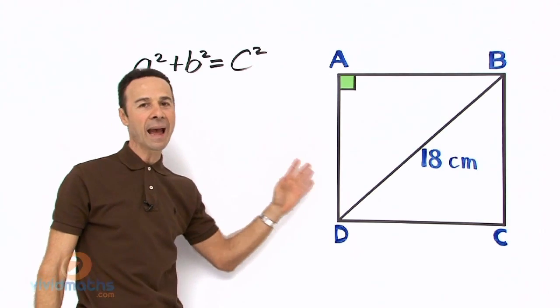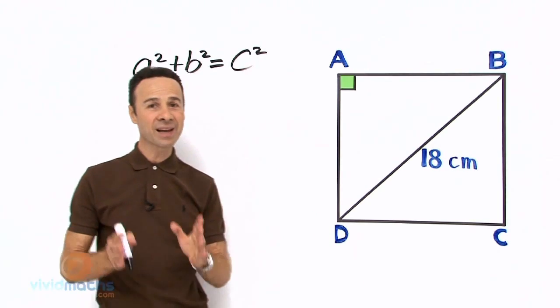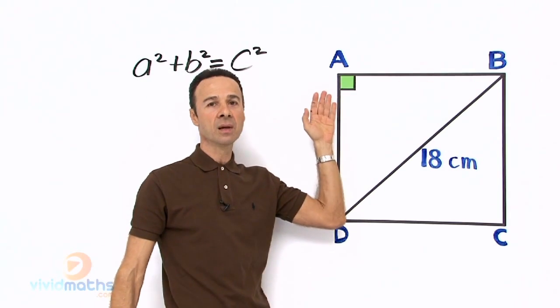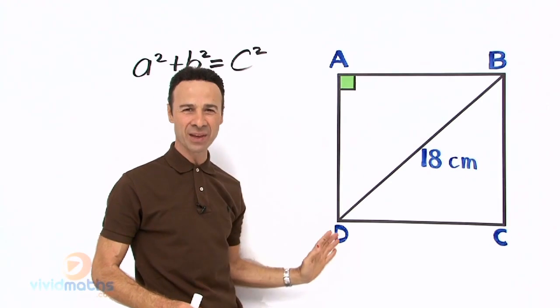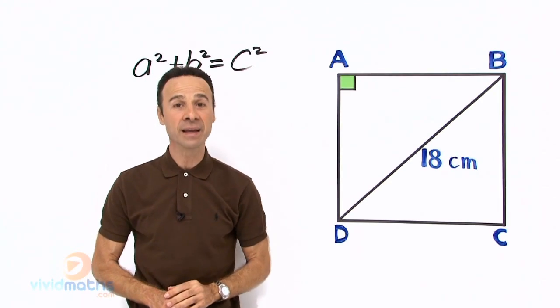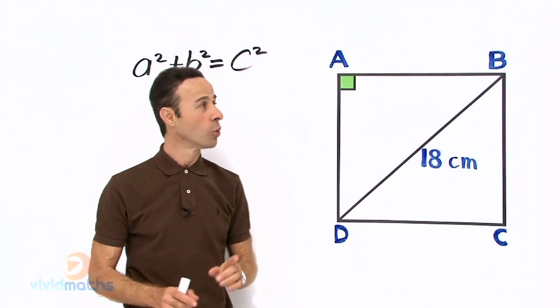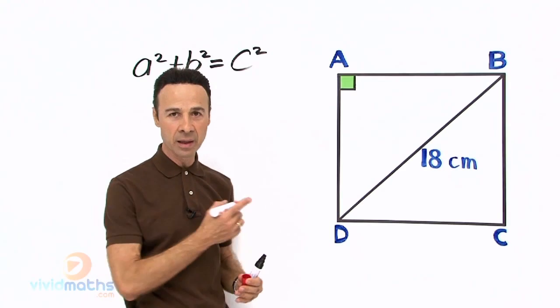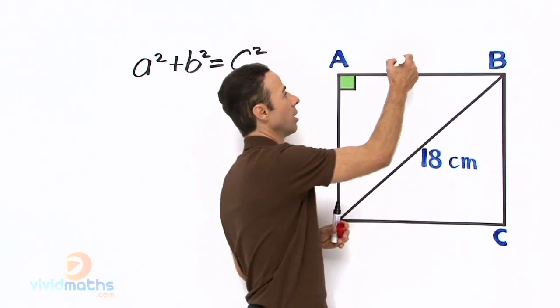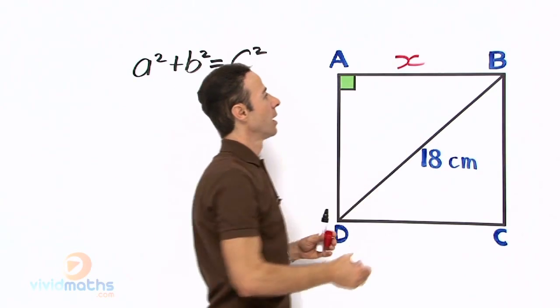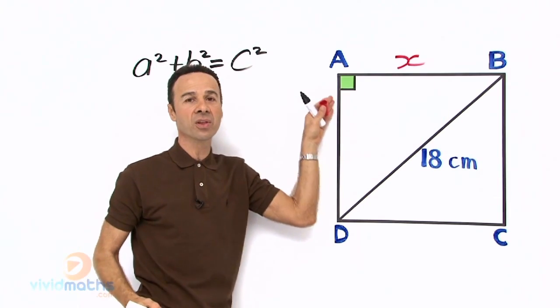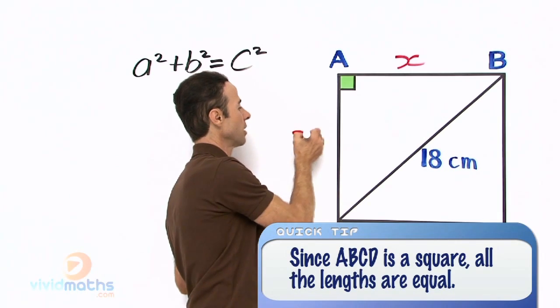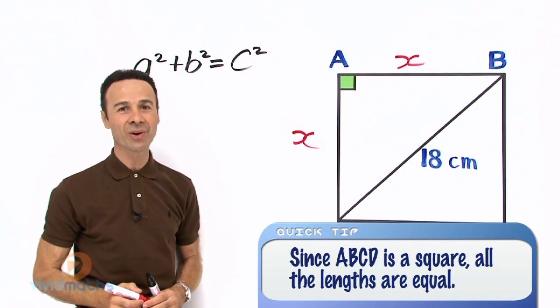Now looking at this square, our target and our mission is to work out this length here, AB. Now generally if we can work out AB we can work out the other length because it is stated in the question that it is a square which means we can actually label this. Let's just call AB, let's just call it x. So I'll put that x and wouldn't you agree that if that's an x along there this here would also be an x since it's a square, so the length AD also an x. We have two x's there.